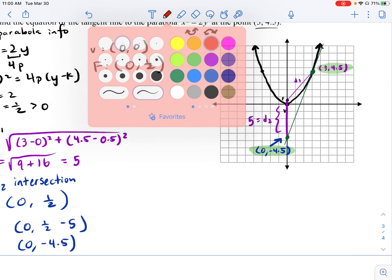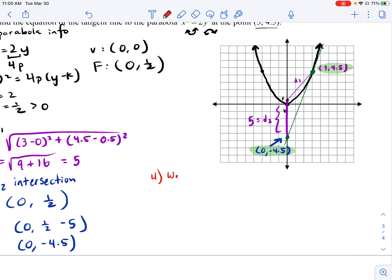So my last step now is just to write the tangent line equation. In order to write the tangent line equation, I'm going to need my slope, which is just using the slope formula. So m equals (4.5 - (-4.5))/(3 - 0), and that's 9/3 which is 3.